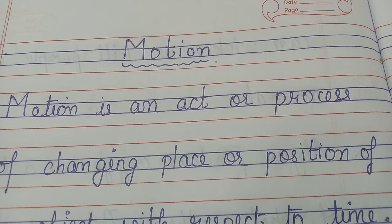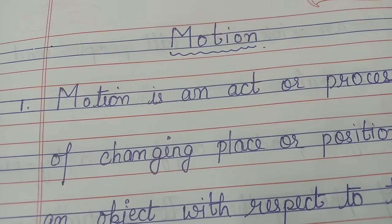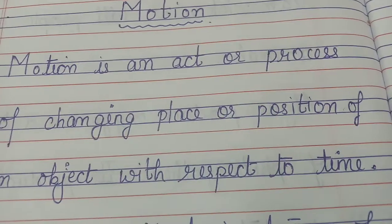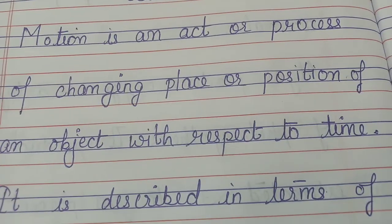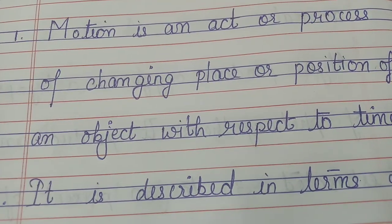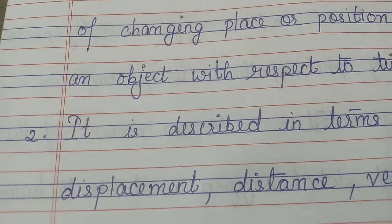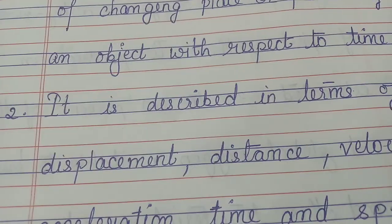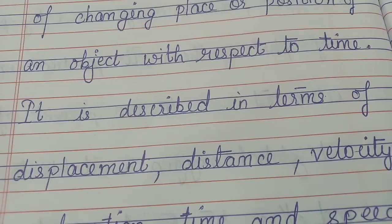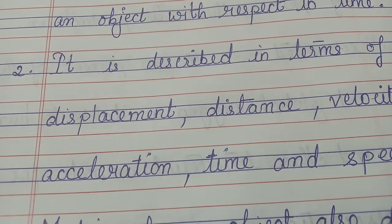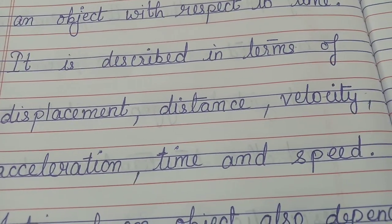Motion is an important topic of physics and today we are going to understand a few important points regarding motion. Motion is an act or process of changing place or position of an object with respect to time. It is described in terms of displacement, distance, velocity, acceleration, time, and speed.